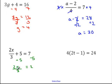Then I have 2x divided by 3, so I multiply both sides by 3. That cancels to give me 2x equals 6. Then I divide both sides by 2 to give a final answer of x equals 3.